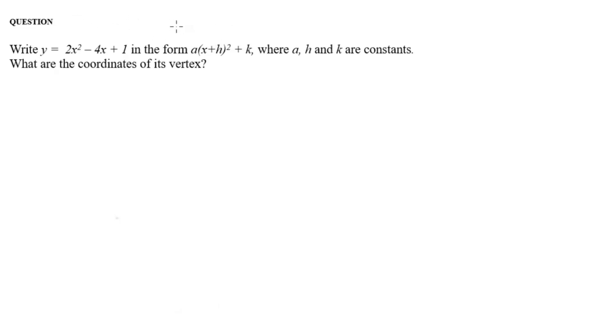And whenever you see this, right, x squared, a(x plus h) squared plus k, it's just telling you that it wants you to write it in the vertex form. And it's asking you for the coordinates of the vertex.